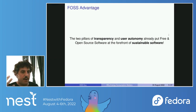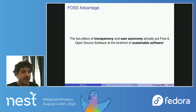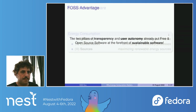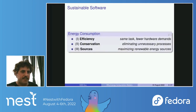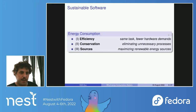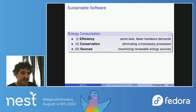I'm going to talk about energy in three different ways: energy efficiency, energy conservation, and energy sources. Energy efficiency means doing the same task but requiring less from the hardware — the result is the same but energy consumed is decreased. Energy conservation is about eliminating unnecessary processes which drive up energy consumption. And for energy sources, I'll specifically talk about maximizing renewable energy sources.